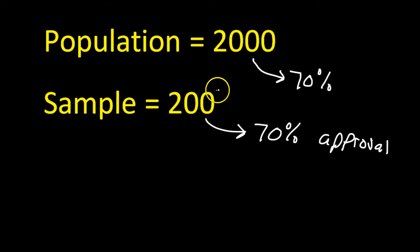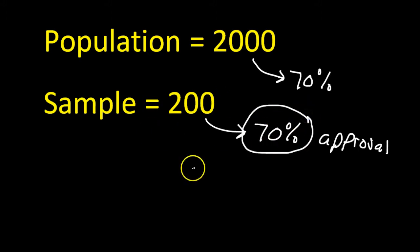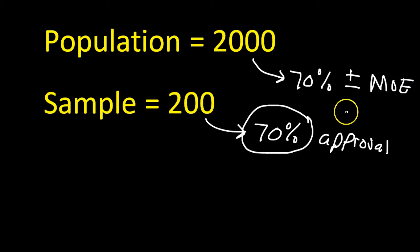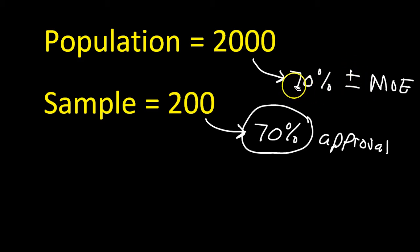Here's where margin of error comes in. When you're dealing with a sample and they give you an answer — 70% of them approve — the margin of error tells you: what about the real population? Are they going to be 70% approval if you really asked every student? The truth will be, well, give or take a certain number. That give or take is called the margin of error. Sometimes they'll say 70%, give or take 2%, so that would mean somewhere between 72% and 68%.